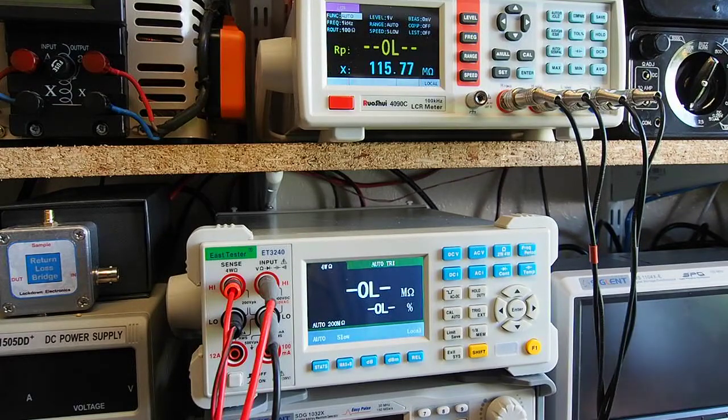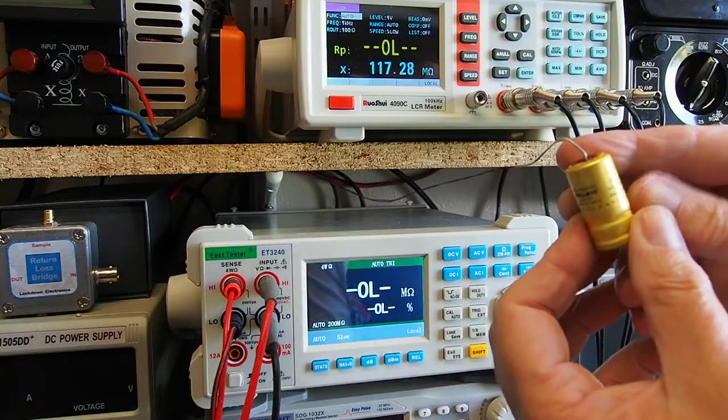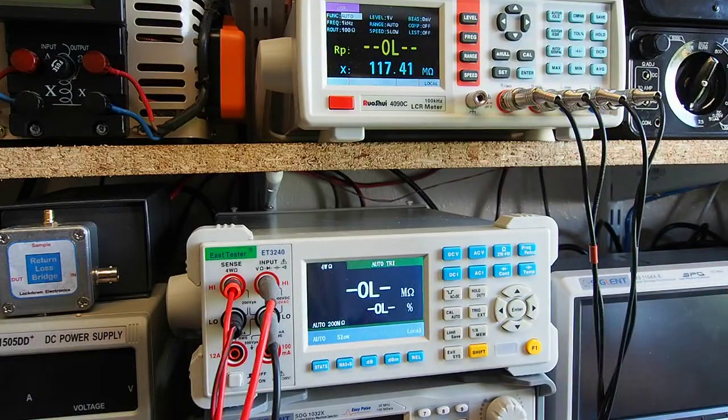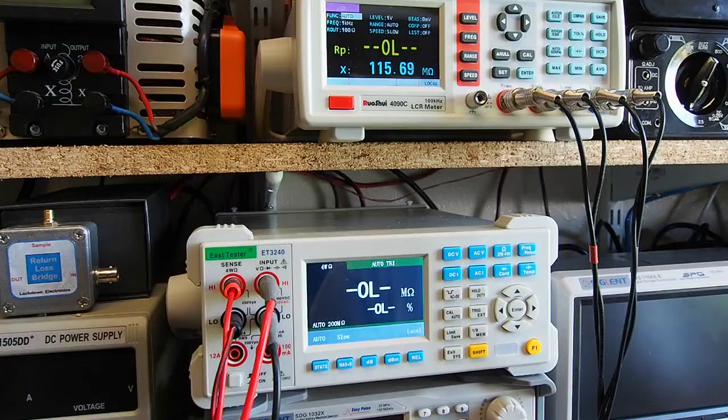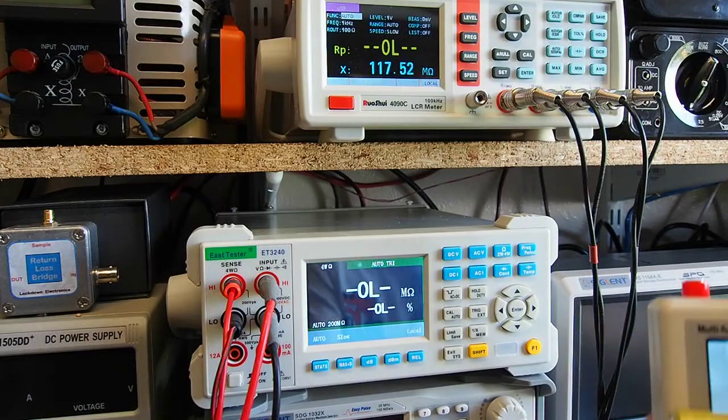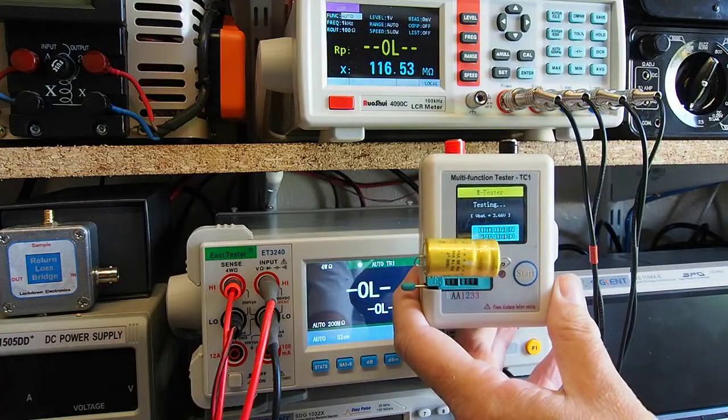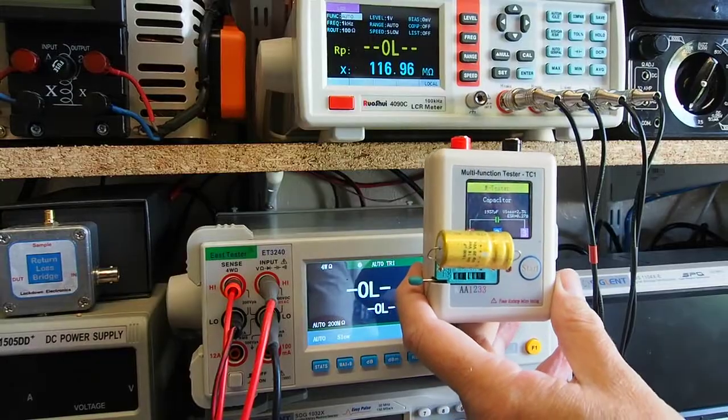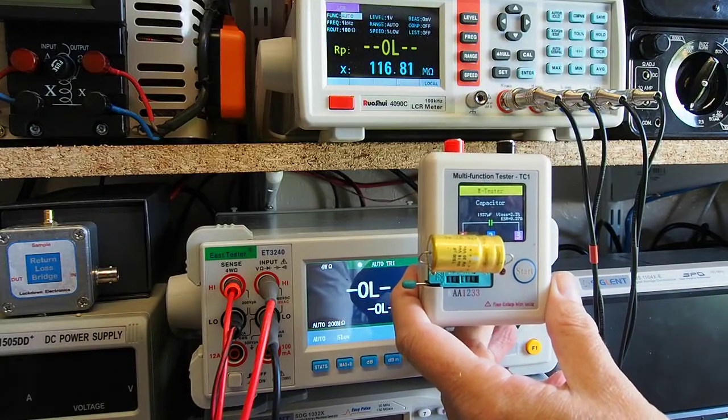Right at the top end of the range I've got a 1500 microfarad capacitor here. It's not new by any stretch of the imagination, it's quite a few years old although it's never been used so I suppose it's what they would call new old stock these days. So we'll pop that in and see what she makes of that. So it's saying 1937 microfarads with an ESR of 0.2 ohms.